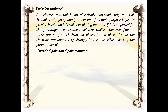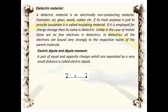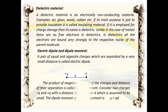An electric dipole is a pair of equal and opposite charges which are separated by a very small distance. The product of the magnitude of one of the charges and the distance of their separation is called dipole moment. Consider two charges, minus q and plus q, with a distance of separation d, assumed to be small. The dipole moment of the arrangement is mu equal to q into d.